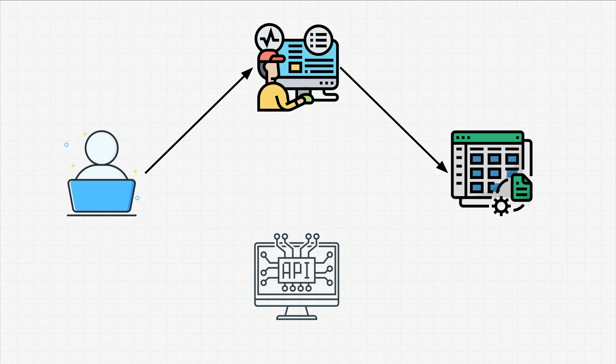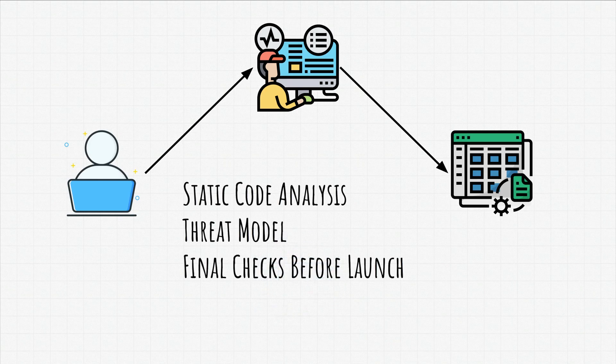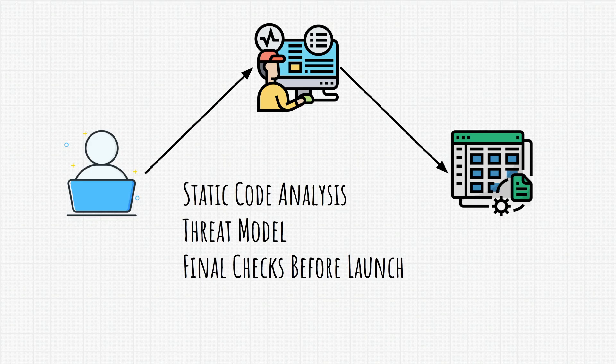A few things that the development team should add during production is static code analysis. A threat model is also needed, and it's important to perform final checks before the application is put out to the public, since testing the final product is most important because only then is the application complete. Penetration tests come in handy here, as they are used to discover vulnerabilities and then patch them.